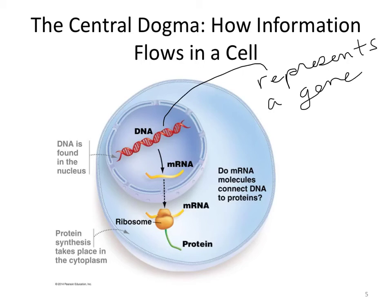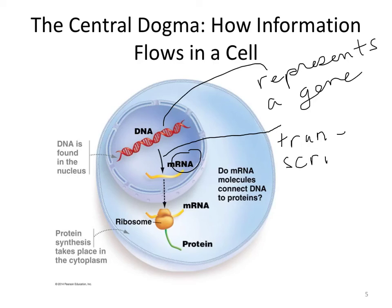That gene is being used to make a very important molecule called messenger RNA, shown here in yellow. The process depicted by this arrow is the process of transcription, and it's carried out by something called RNA polymerase.